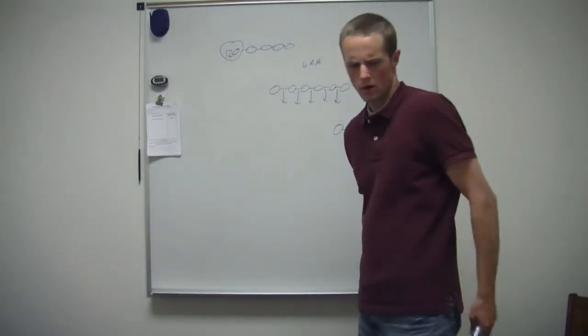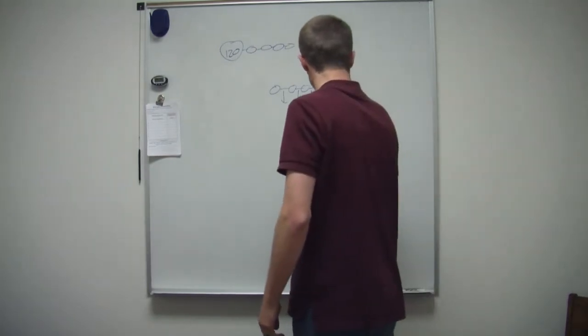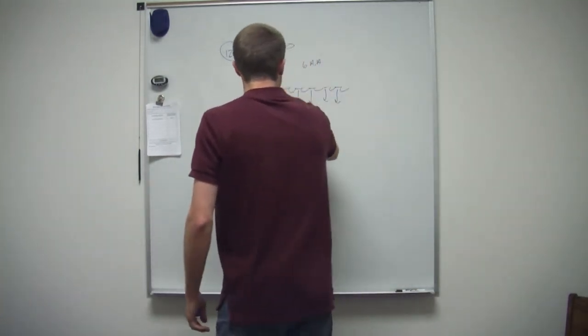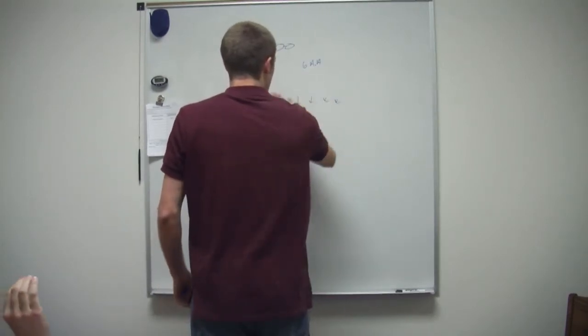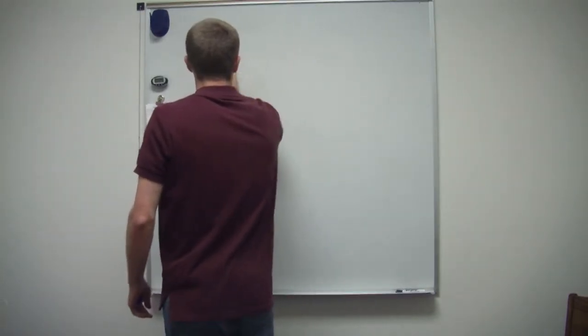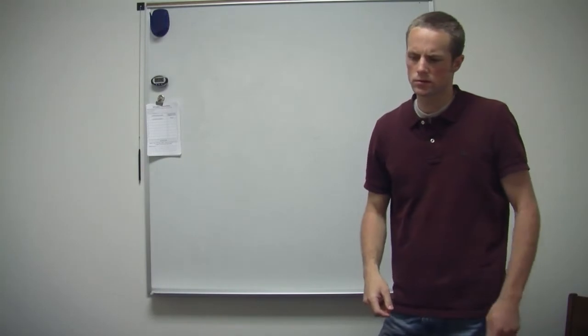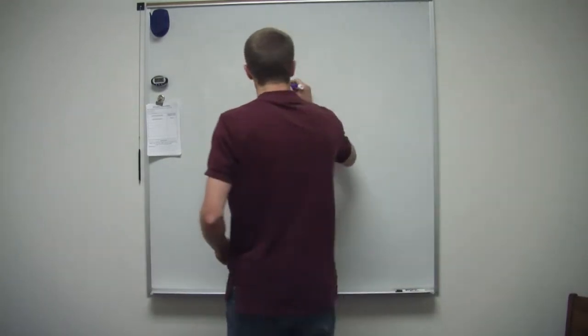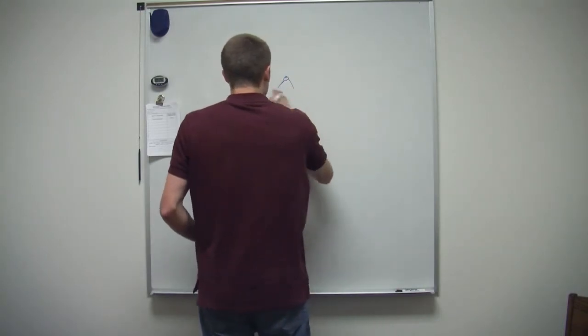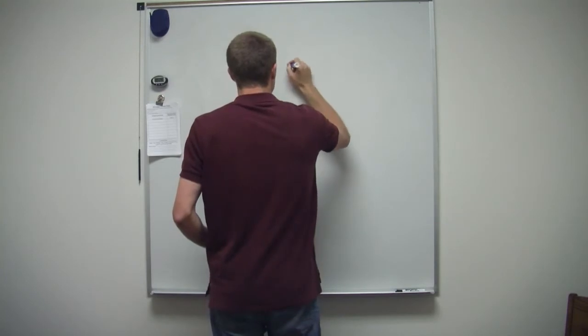I had a question about just the phosphodiester linkage. Yeah, just maybe like, can you just explain how, like what it is? I wrote it down. Adjacent nucleotides are joined together to build a polynucleotide, and the bond is called phosphodiester linkage. So it's a phosphate group plus a sugar of the two nucleotides? Yeah. Okay.